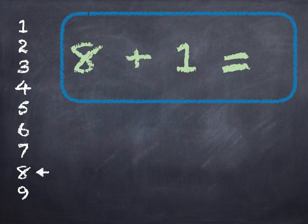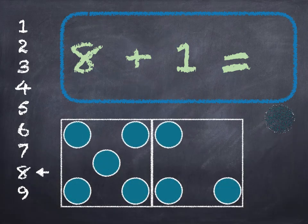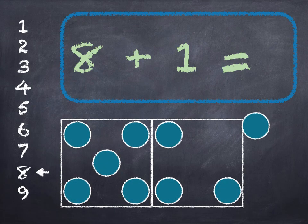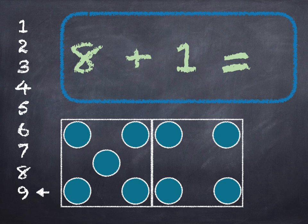8 plus 1. 8 in the box, add 1 on. 8, 9. Start at 8 on the number line, go down 1, we get to 9. 8 plus 1 is 9.